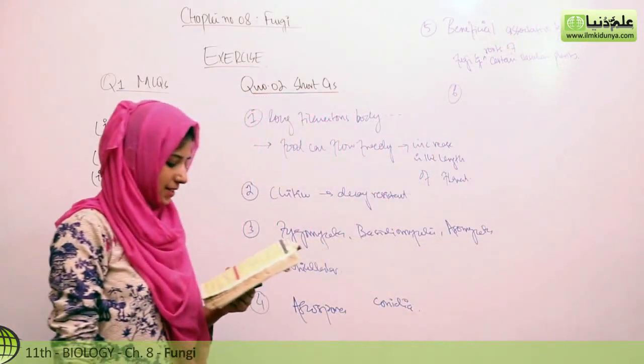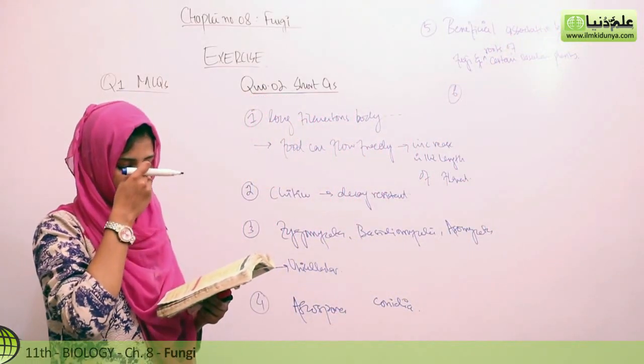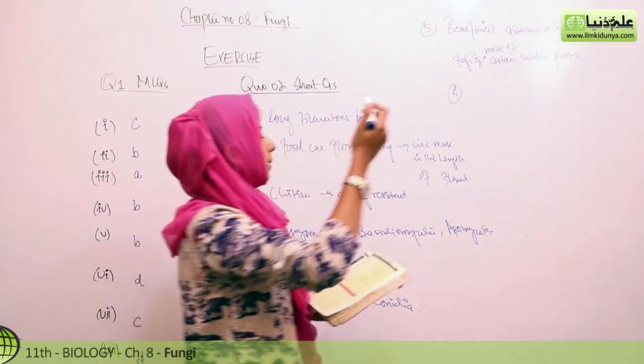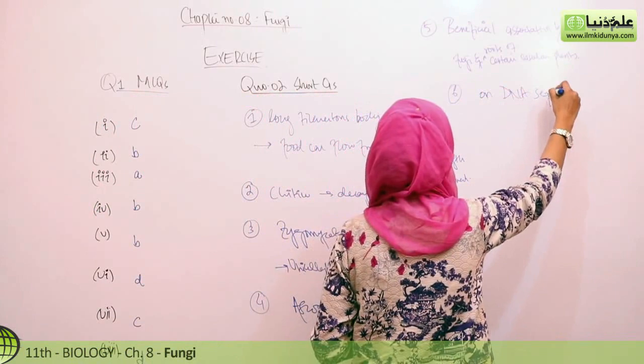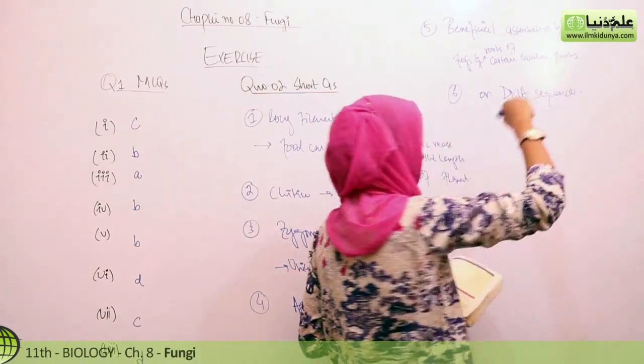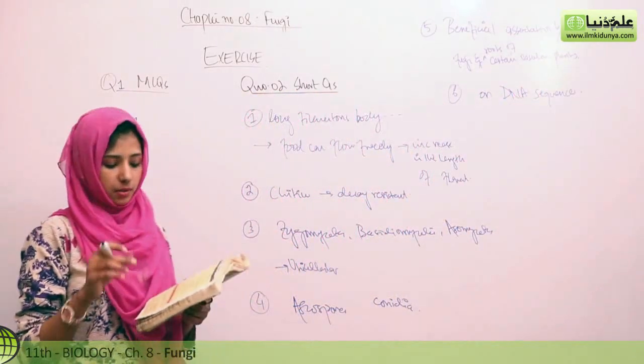Sixth question, by what means can individual imperfect fungi be classified? Isko hum classify kar sakte hain on DNA sequencing. DNA ke sequence mein classify kar sakte hain, because aapas mein unki bohat zyada variability hai.